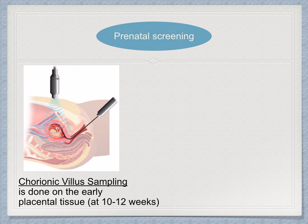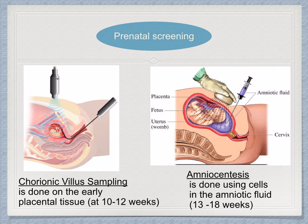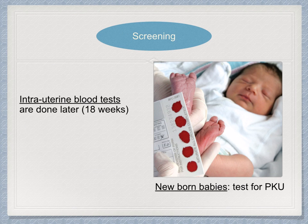Prenatal screening can be done by chorionic villus sampling, which is performed on early placental tissue at about 10 to 12 weeks. Then there's amniocentesis, which uses cells in the amniotic fluid and is done at about 13 to 18 weeks. Intra-uterine blood tests can be done at about 18 weeks. And once the baby is born, you can also screen the child for diseases like phenylketonuria (PKU).